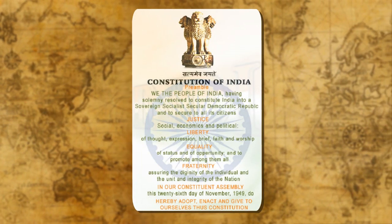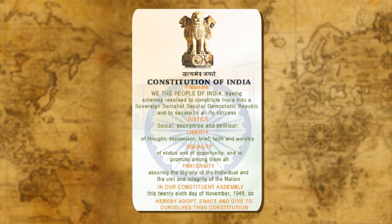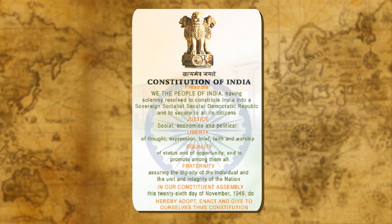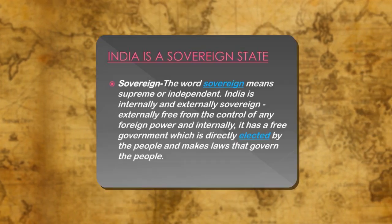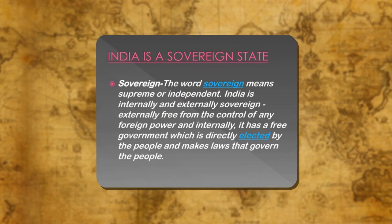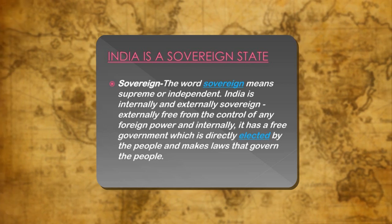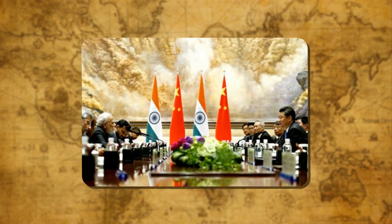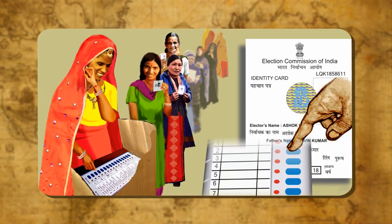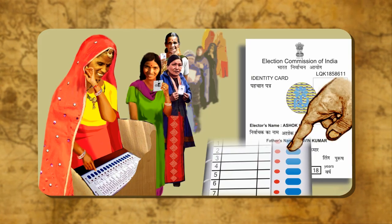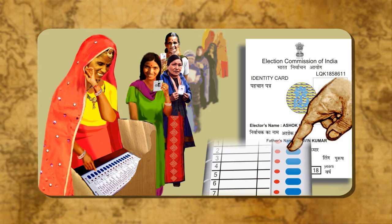In India, the preamble of the constitution lays down the type of government that we have adopted: Sovereign, Secular, Socialist, and Democratic Republic. The word sovereign means supreme or independent nation. India is internally and externally sovereign — externally free from control of any foreign power, and internally it has a free government which is directly elected by the people and makes laws that govern the people.